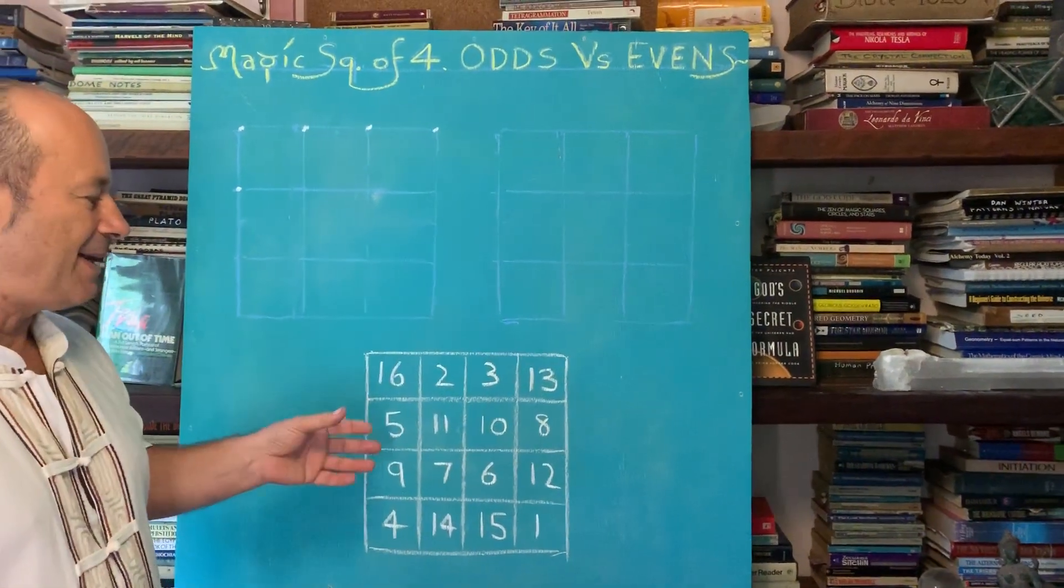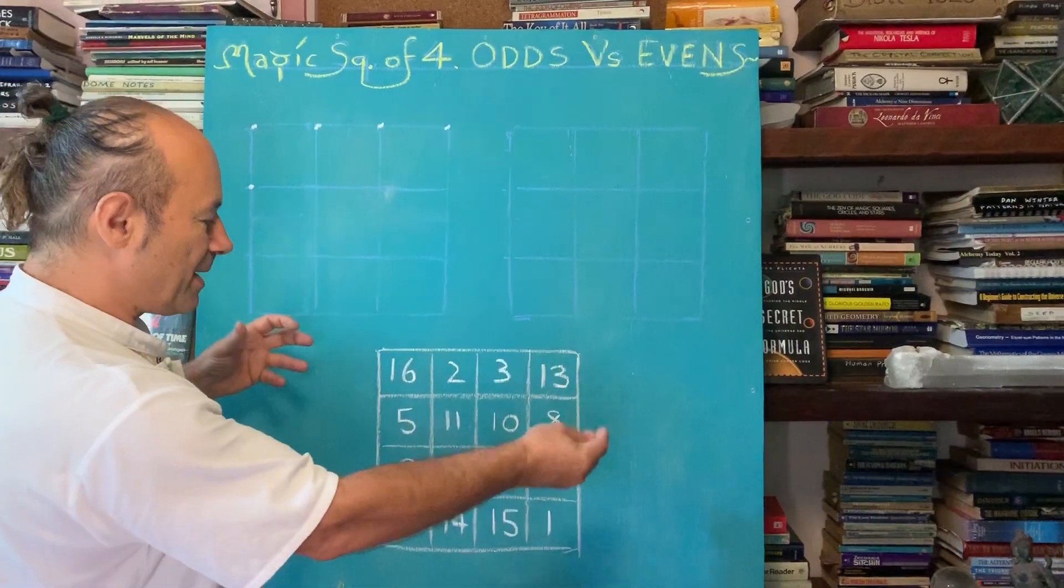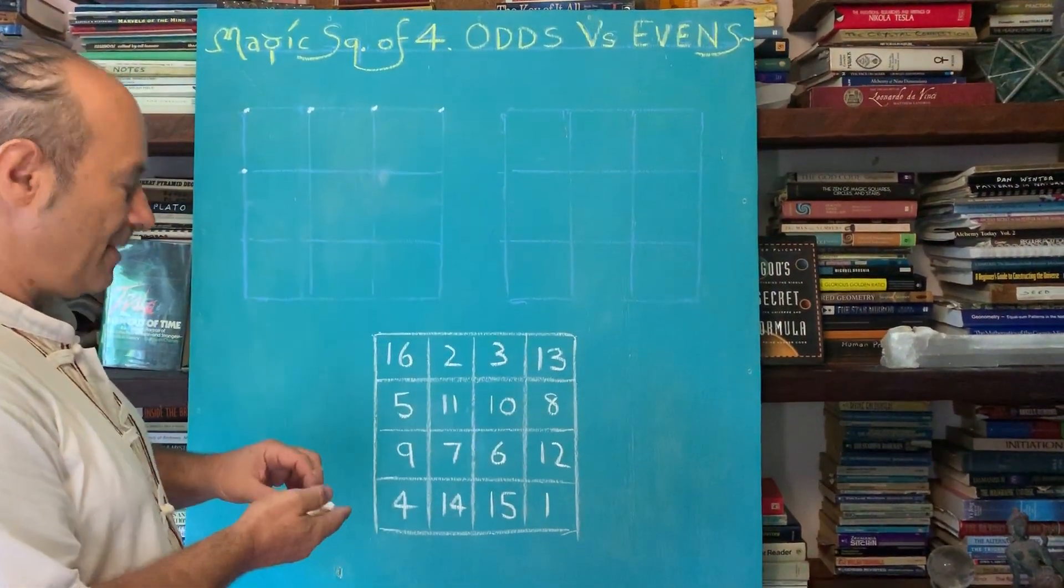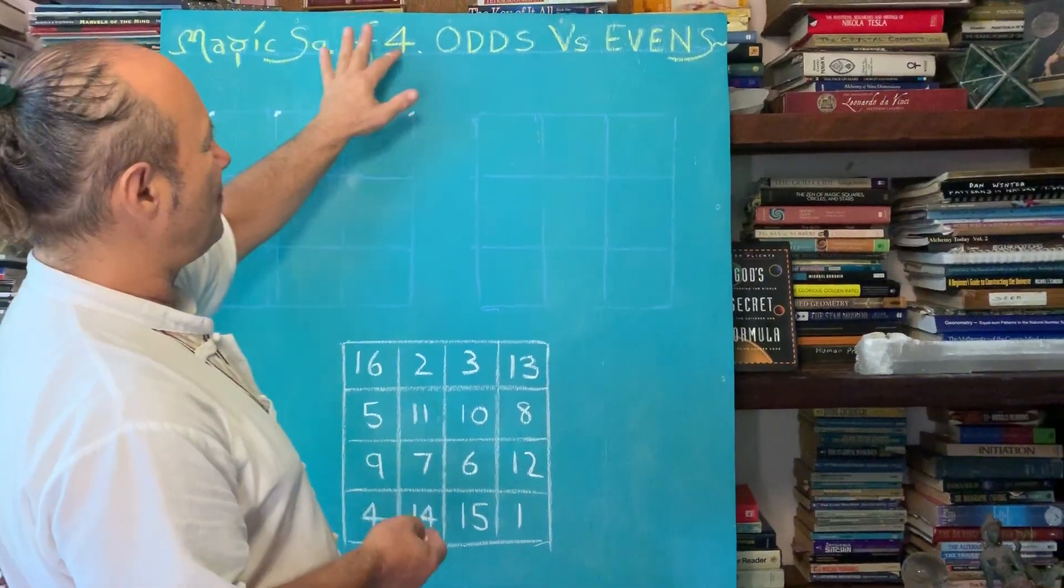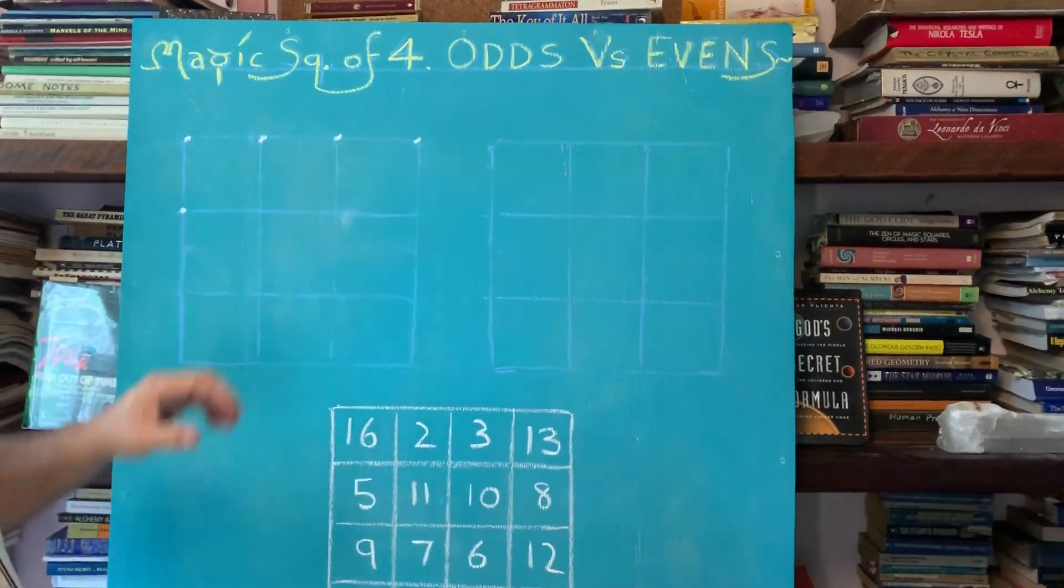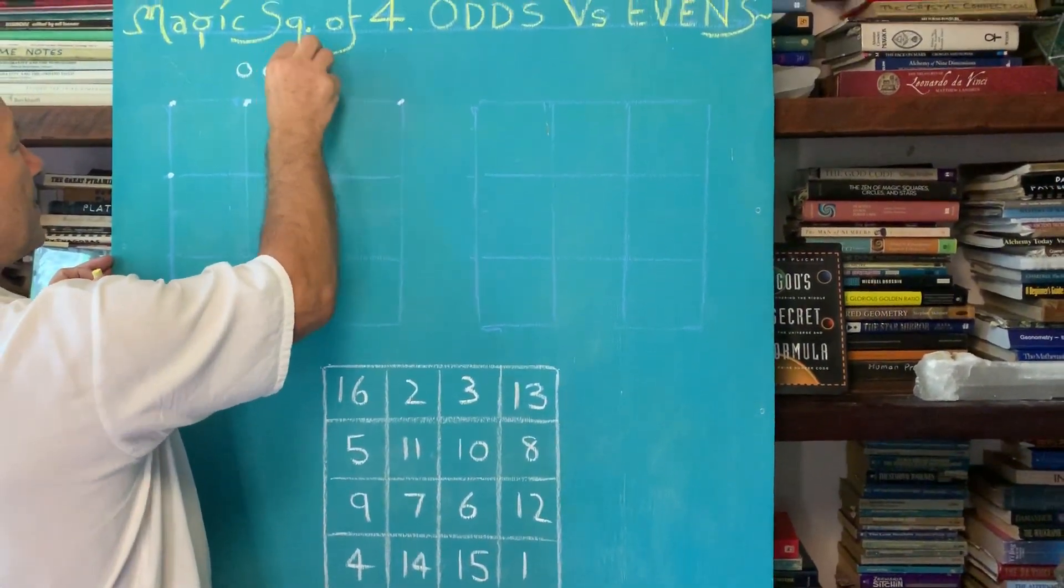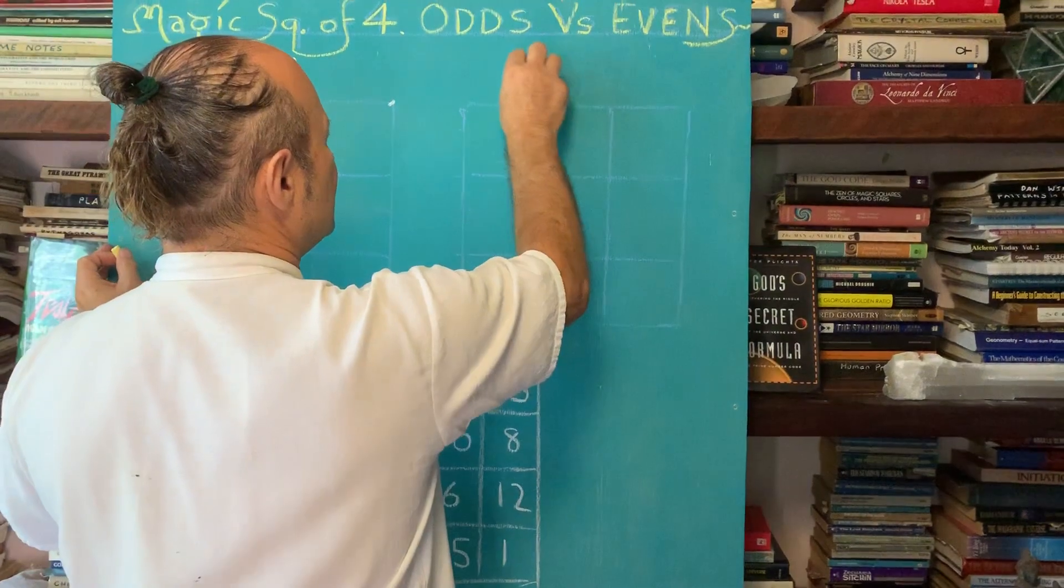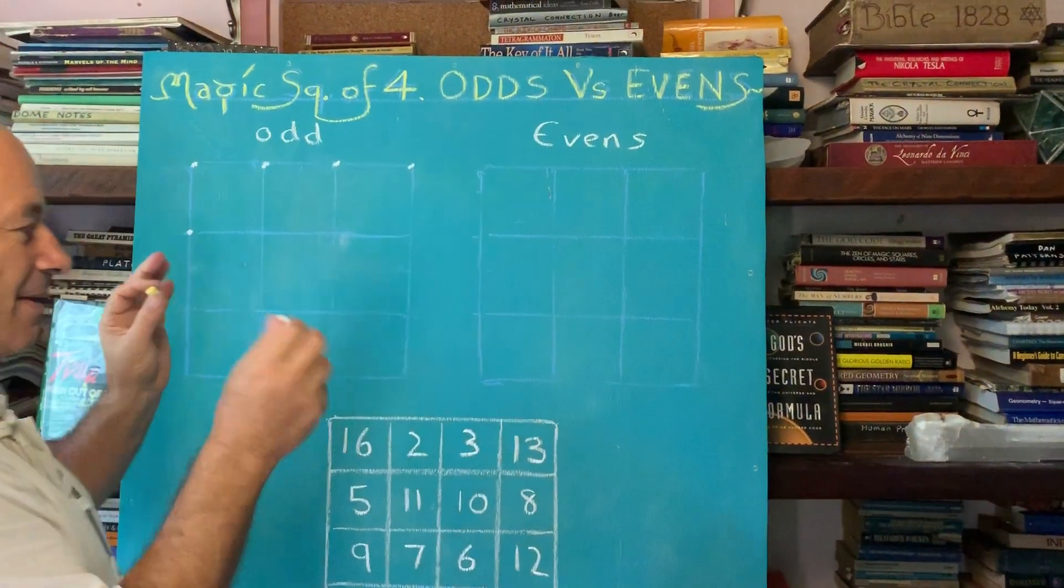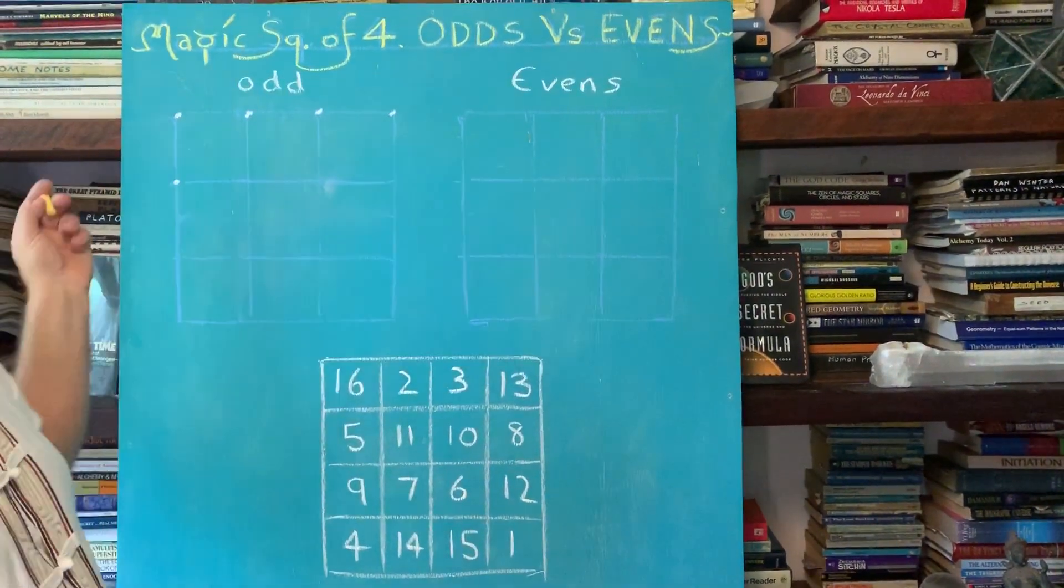There are many examples of how we can get children to rip this apart, open it up and find more patterning within the numbers. So I'm calling this the magic square of 4x4, the odds versus the evens. Over here we'll draw the odd numbers, and over here we're going to draw the evens. I want you to observe what relationship the odd numbers have to the evens, if any.